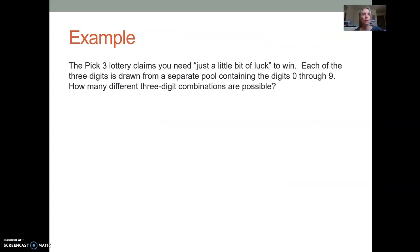Let's look at another example. The pick three lottery claims you need just a little bit of luck to win. Each of the three digits is drawn from a separate pool containing the digits zero through nine. How many different three digit combinations are possible? So if we lay this out, the way I like to lay out my counting principle questions is I say, okay, here's the first number that's drawn. Here's the second number that's drawn. Here's the third number that's drawn. And then beneath it, I'm going to write what the options are.